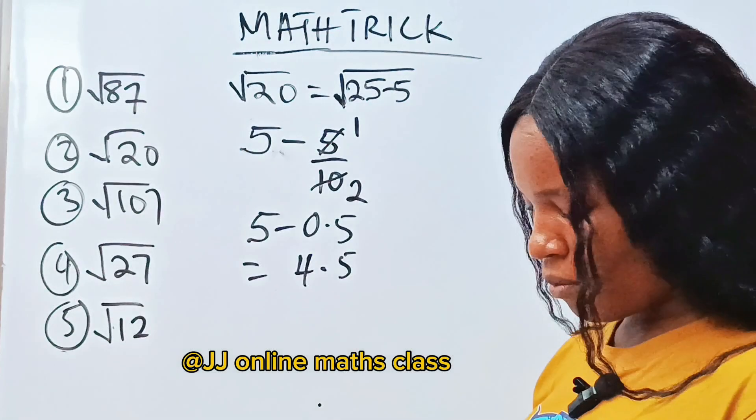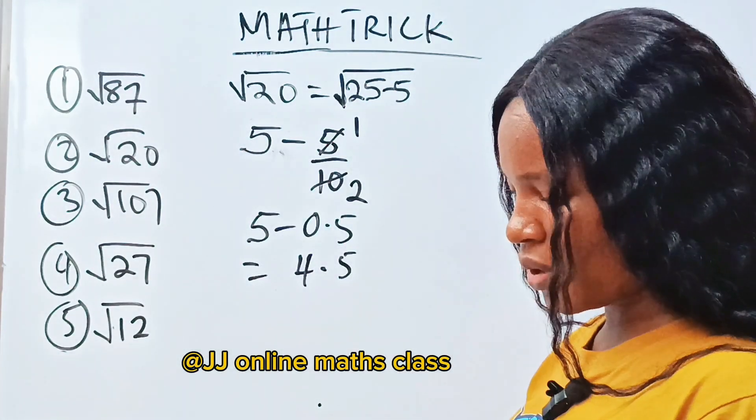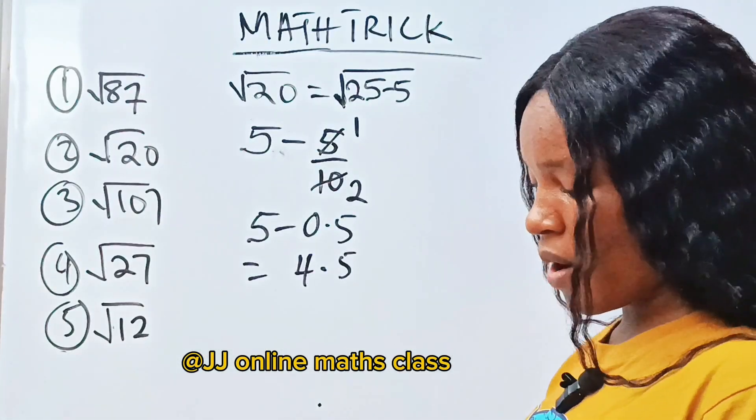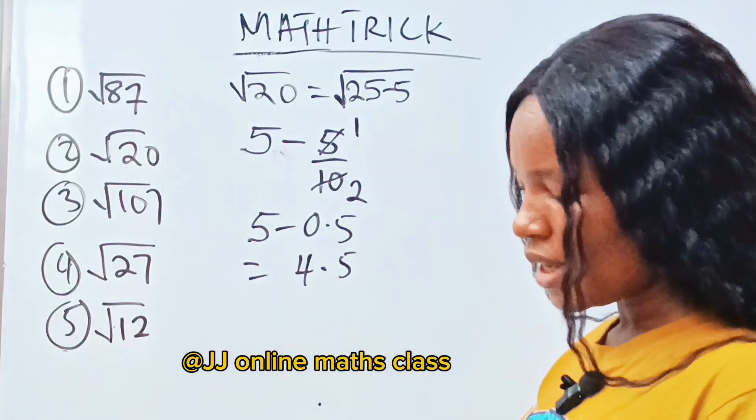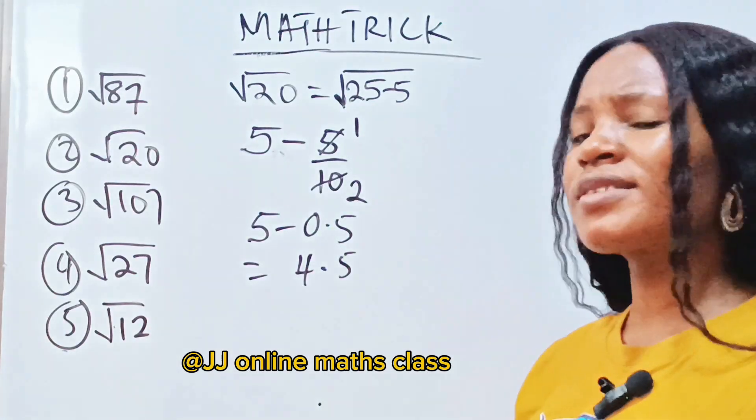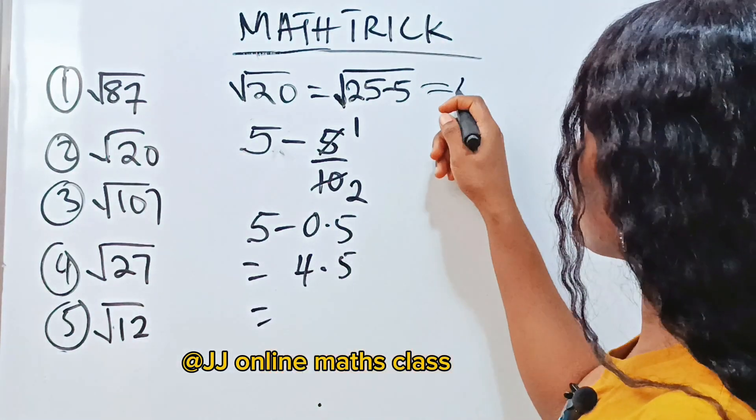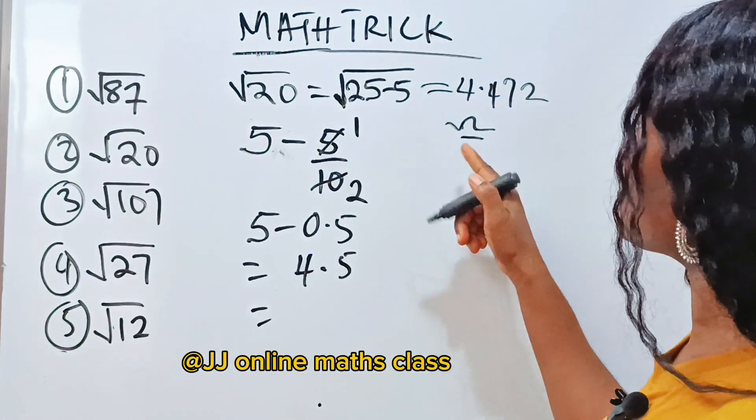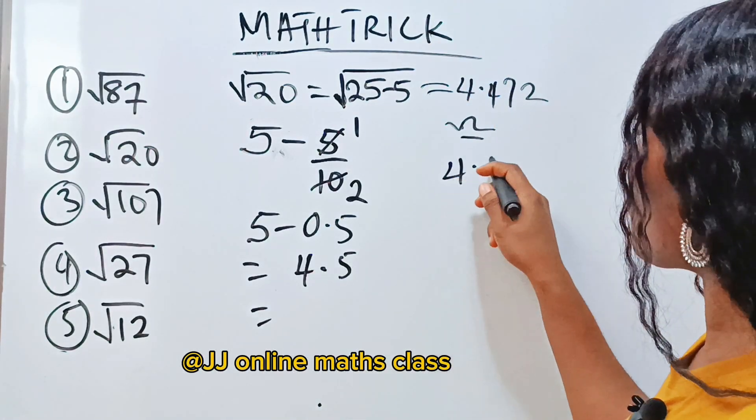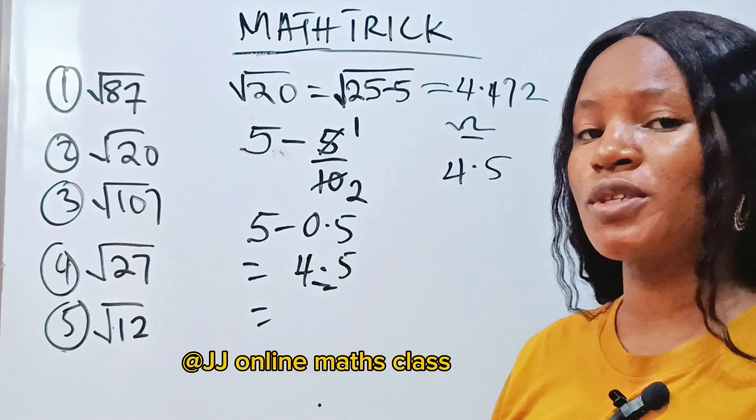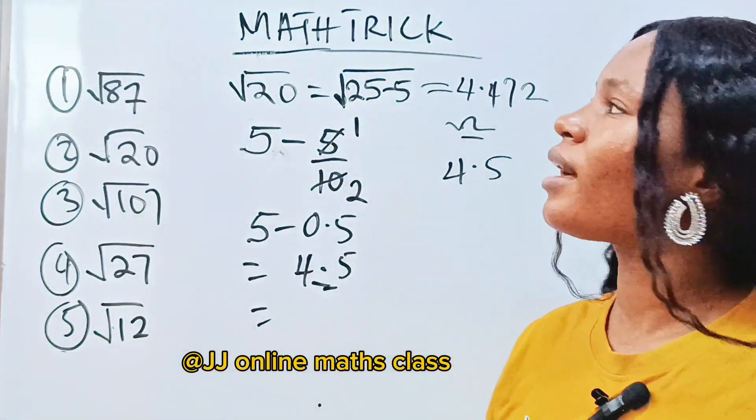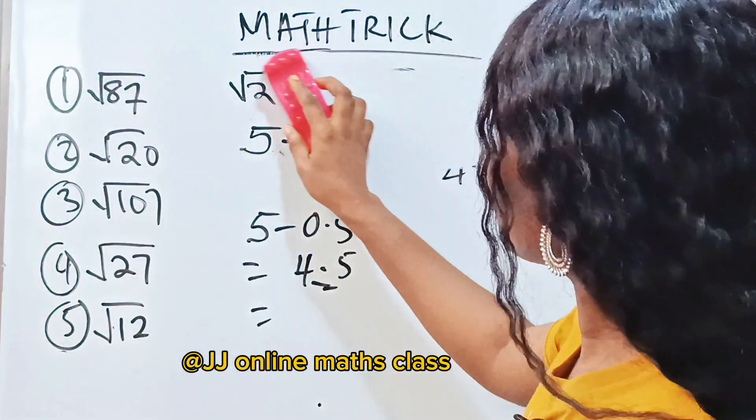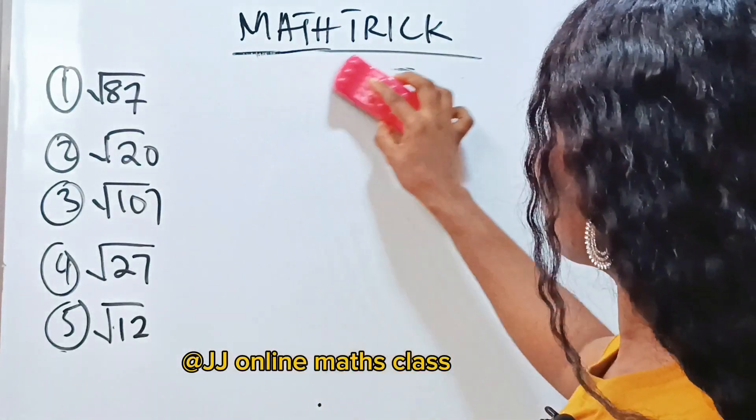So we have 5 minus 0.5... Square root of 20 is 4.472. The exact value is 4.472, and that means approximately is 4.5, which is what we got. Now let's solve another one.